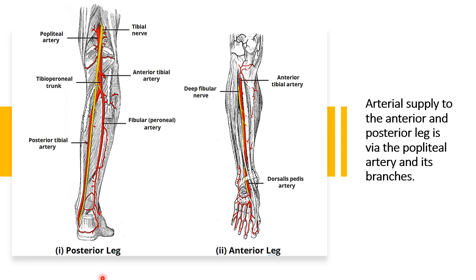The posterior tibial artery enters the sole of the foot by the tarsal tunnel, accompanying the tibial nerve. The fibular or peroneal artery descends posteriorly to the fibula within the posterior compartment of the leg, where it gives rise to a perforating branch which penetrates the intermuscular septum to supply muscles in the lateral compartment of the leg.